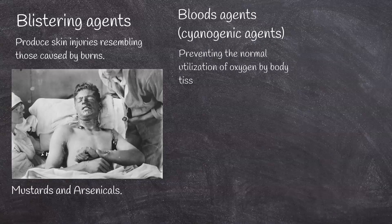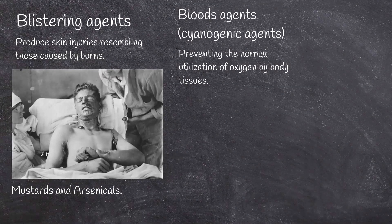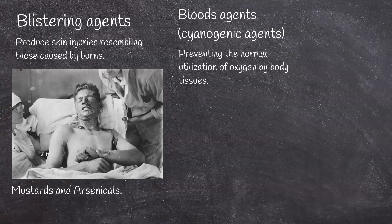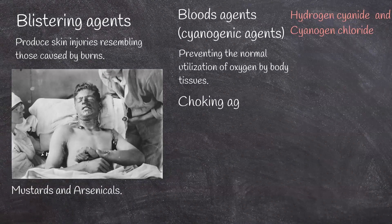Blood agents are cyanogenic agents. Blood agents are a cyanide group of chemicals that affect bodily functions by preventing the normal utilization of oxygen by body tissues. Hydrogen cyanide and cyanogen chloride are the main agents in this class.